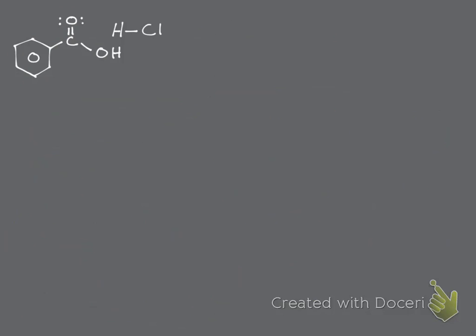Let's start walking through the mechanism. I'm drawing benzene in a simplified way throughout this mechanism because it is easier — I may just end up using phi at some point. The methanol is not written up here yet because it has nothing to do with the reaction at this point; it's not going to come into play until the next step.